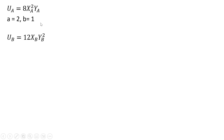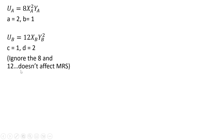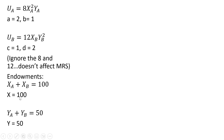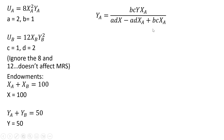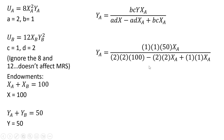Second example: also Cobb-Douglas utility functions, but now A equals 2 and B equals 1 for consumer A, and C equals 1 and D equals 2 for consumer B. We can ignore the scalar coefficients 8 and 12 since they do not affect the marginal rate of substitution. Total endowment for good X is 100 and for good Y is 50. Using the general solution and making our substitutions, we simplify to get the specific contract curve for this scenario. And that's it.